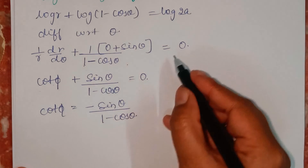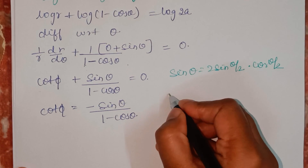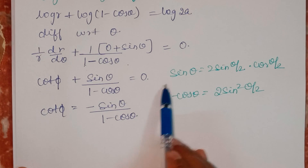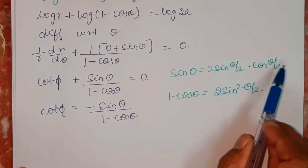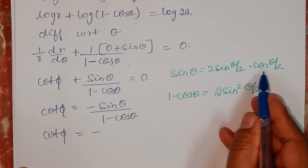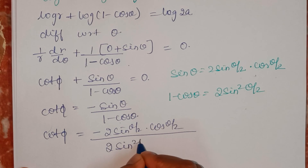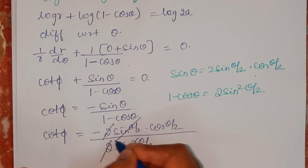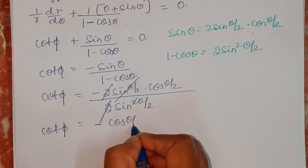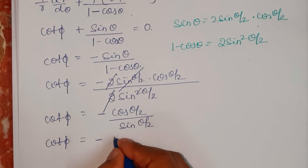We know that sin theta can be written as 2 sin(θ/2) cos(θ/2), and 1 minus cos theta can be written as 2 sin²(θ/2). Substituting these: cot φ equals minus 2 sin(θ/2) cos(θ/2) divided by 2 sin²(θ/2). The 2s cancel and one factor of sin(θ/2) cancels, leaving cot φ equals minus cos(θ/2) divided by sin(θ/2), which is minus cot(θ/2).